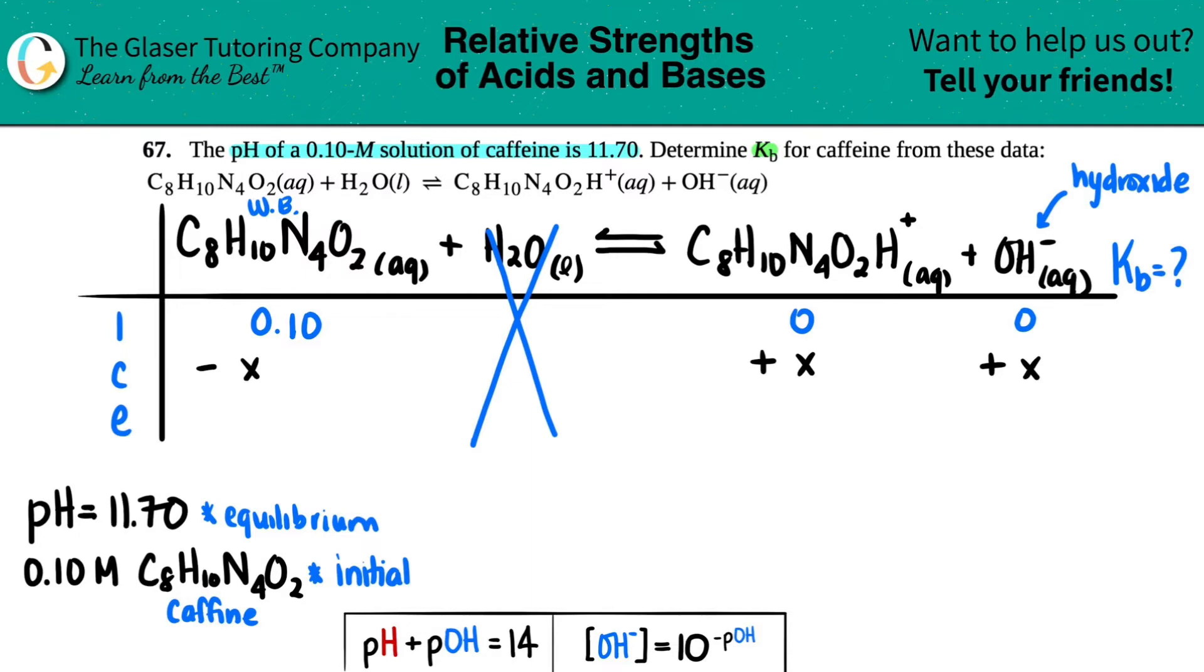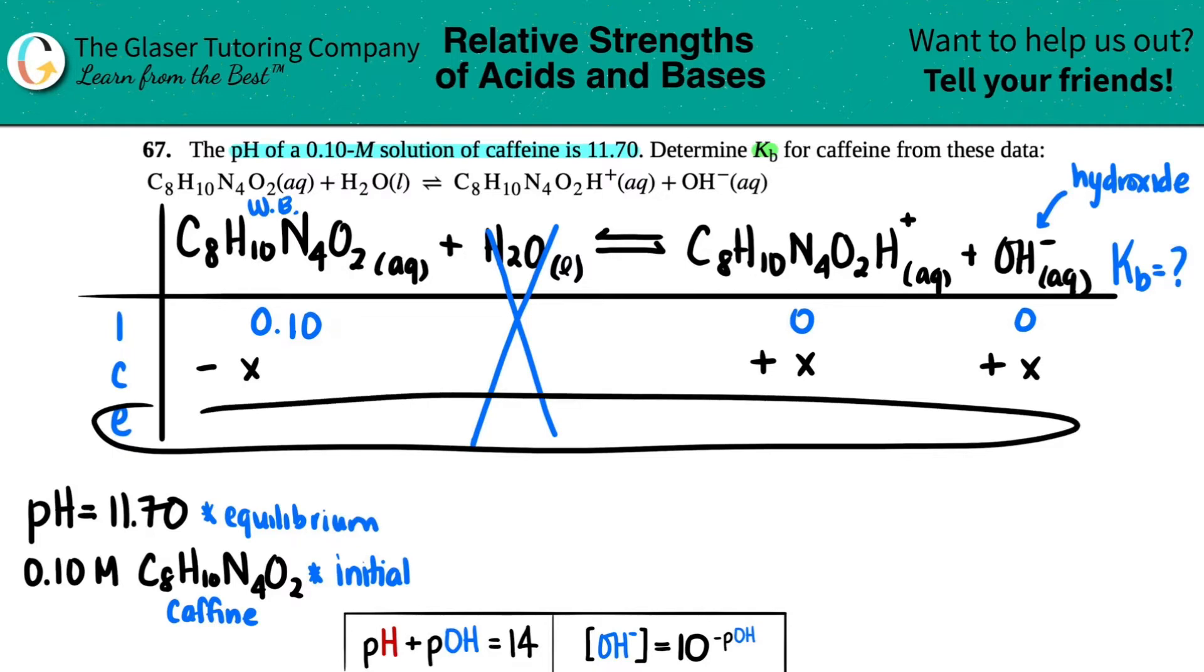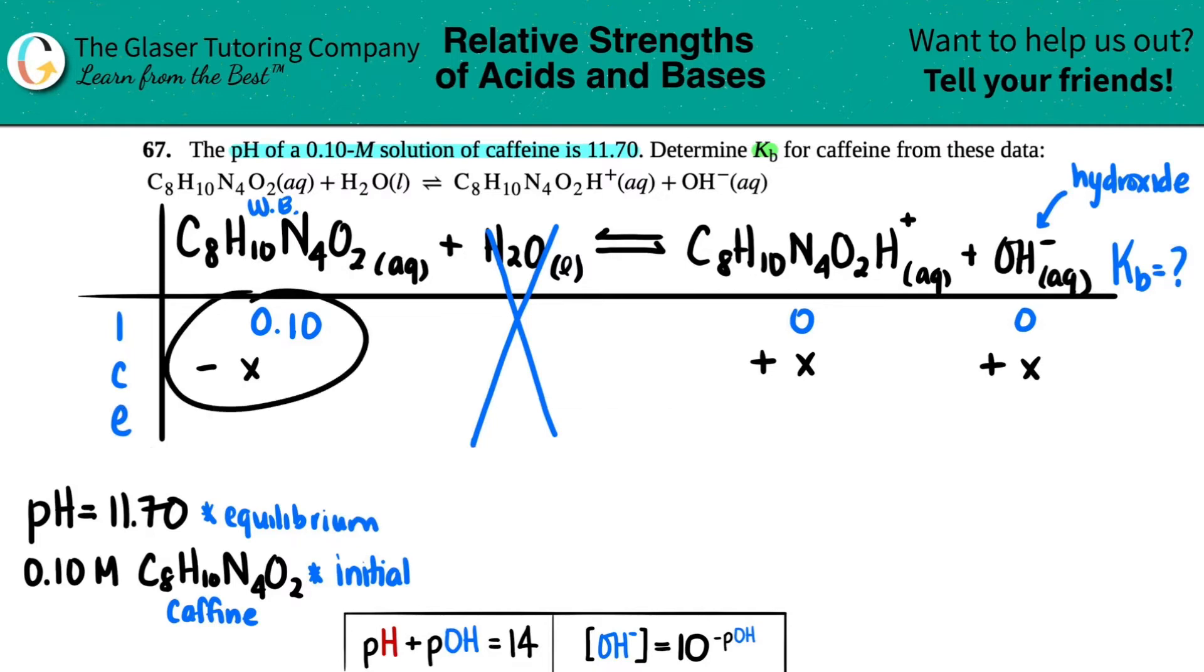And then comes equilibrium, which is the E line. We're going to use this to get our KB value. And the equilibrium is just the combination of your initial and your change. So 0.10 minus x is 0.10 minus x. 0 plus x is x. 0 plus x is x.